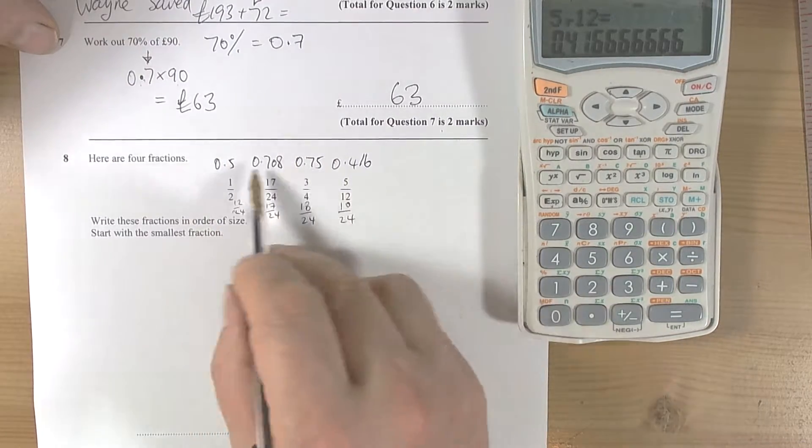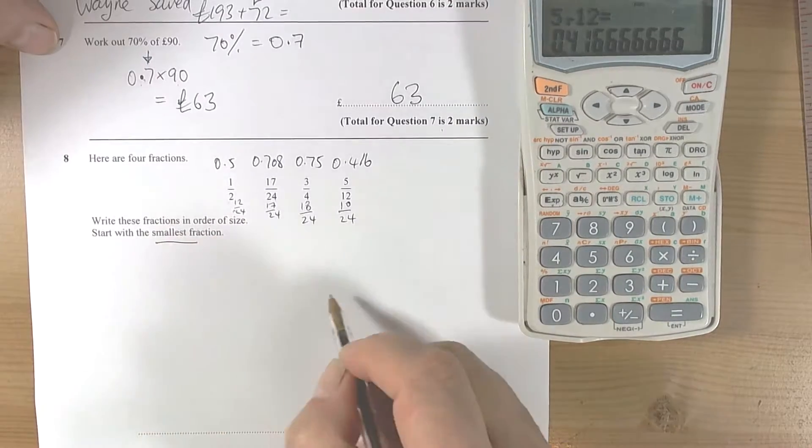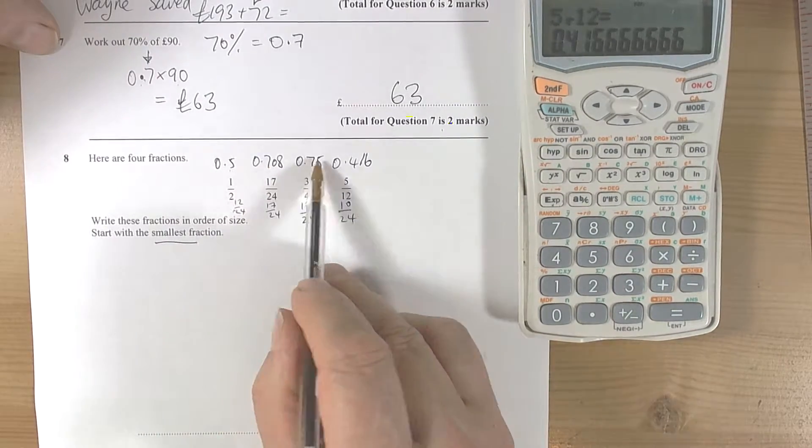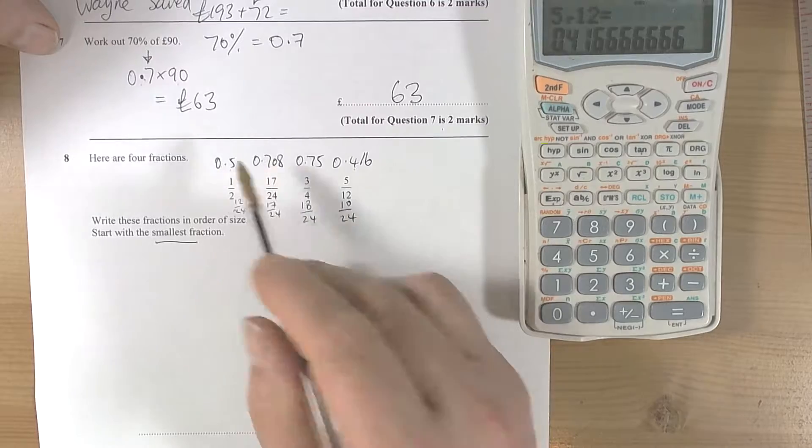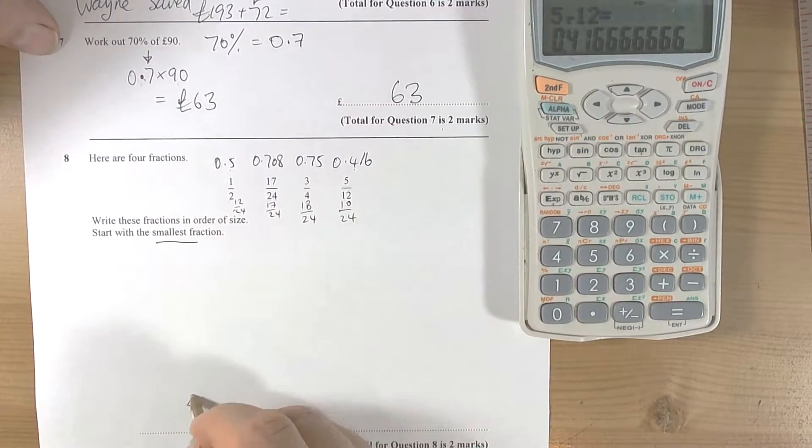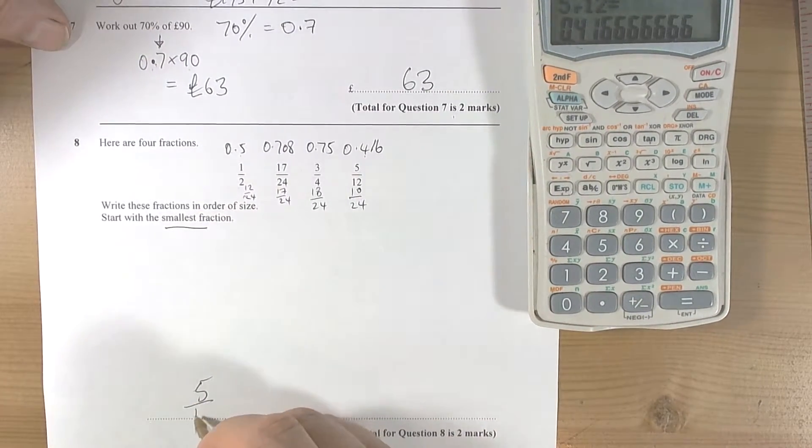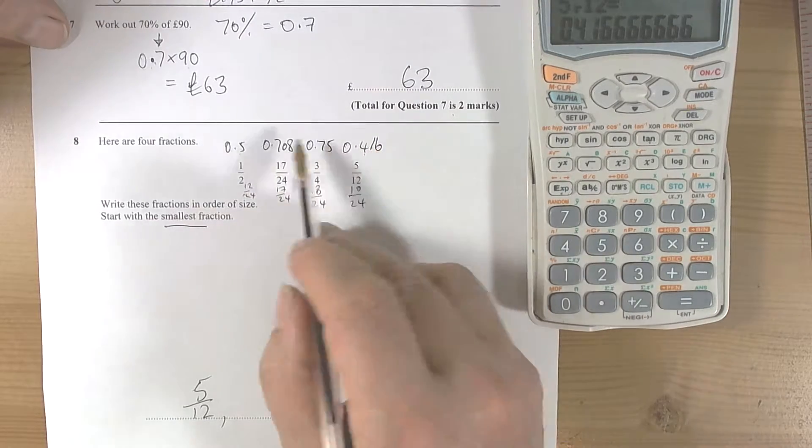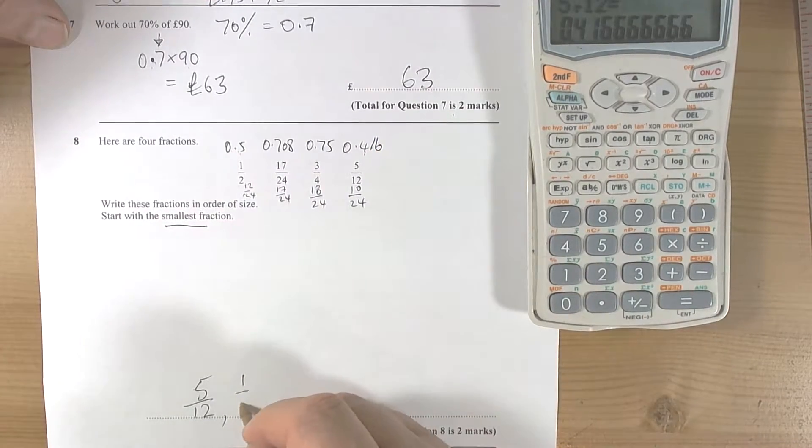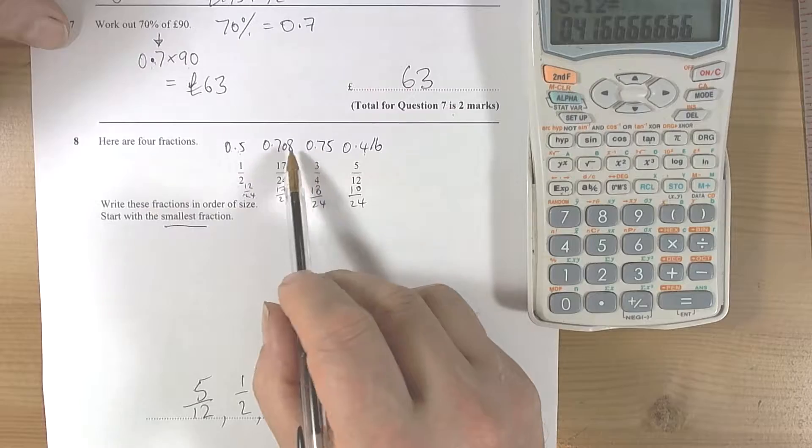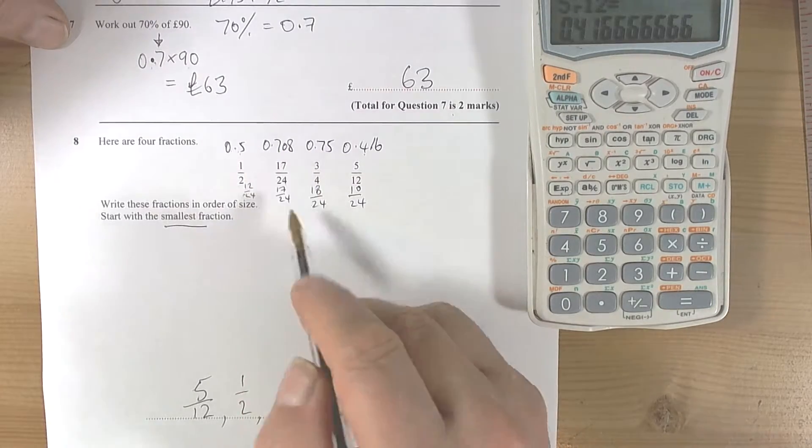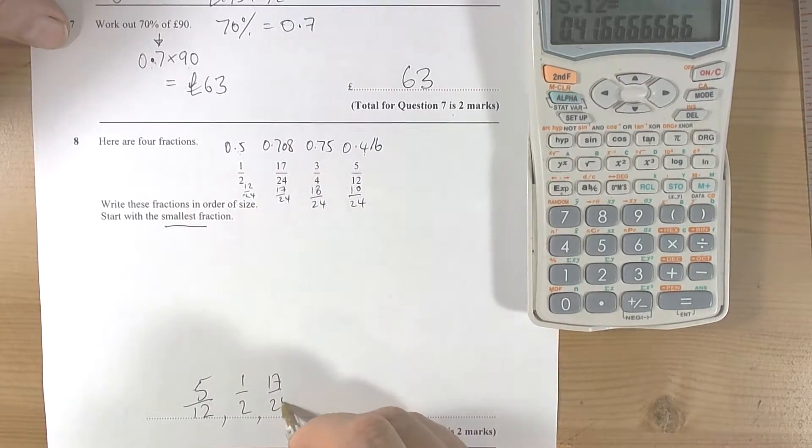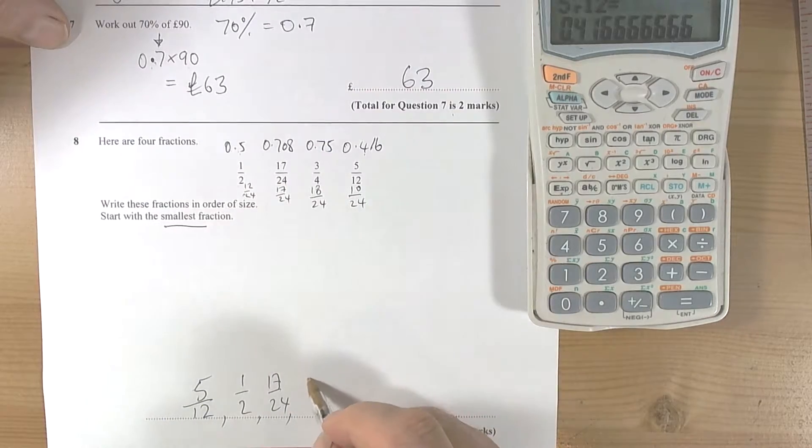It says start with the smallest fraction. But when we look at this list we can see that 0.4 is the smallest out of those decimals. So the list is going to start with 5/12. The next smallest is 0.5, so that's the same as a half. The next smallest after that is 0.708, so that's 17/24. And then it's 3/25.